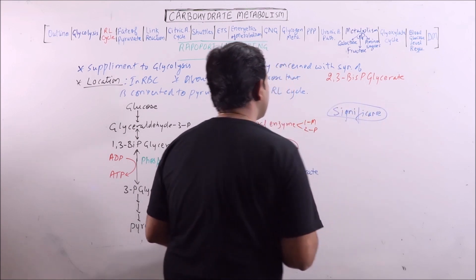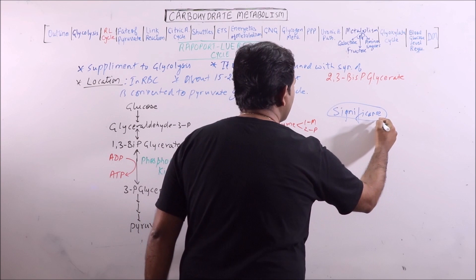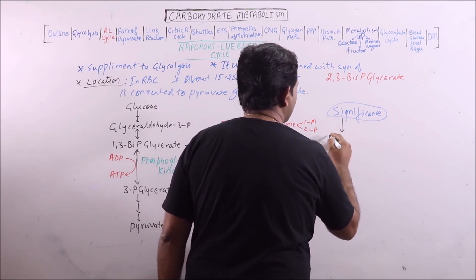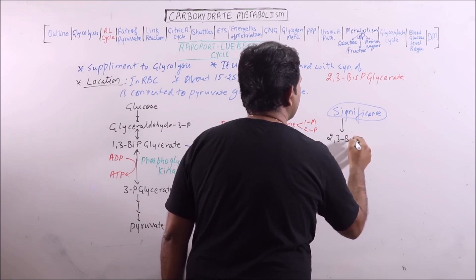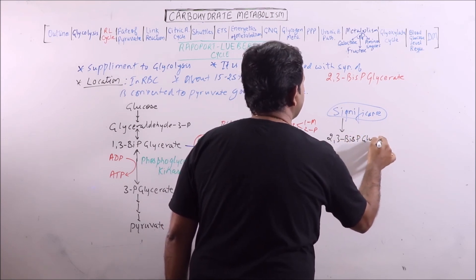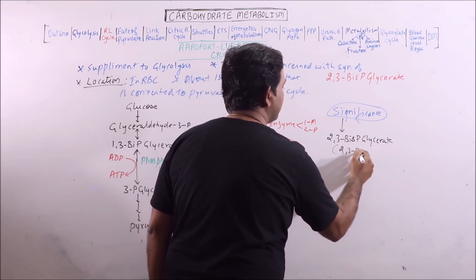What is the significance of Rapaport-Lubring cycle? Rapaport-Lubring cycle results in formation of 2,3-bis-phosphoglycerate. In short, we write it 2,3-BPG.